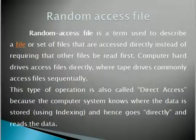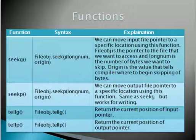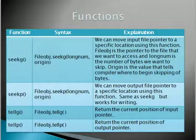Next, we are going to see the functions in random access files. We have four file pointer functions in random access. We use pointer functions here because when we are using files, we need to point to a position, read the file, or write the file. The functions are: seekg, seekp, tellg, and tellp.